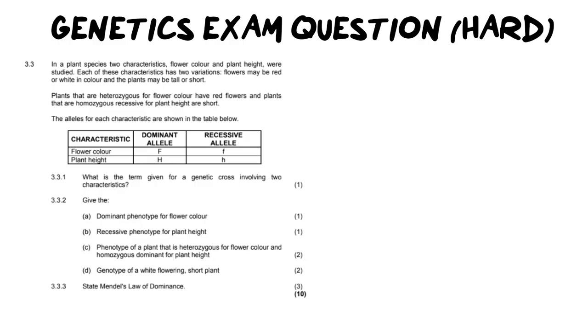It says in a plant species, two characteristics, flower color and plant height were studied. Each of these characteristics have two variations. Flowers may be red or white in color and the plants may be tall or short.